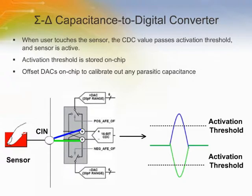The capacitance-to-digital converter on the AD7147 has a sigma-delta architecture with 16-bit resolution. There are 13 possible inputs to the CDC, which are connected to the input of the converter through a switch matrix. Each capacitance input can be connected to the positive input or to the negative input of the converter. Connecting to the converter's positive input results in an increase in CDC value when the user touches the sensor, while connecting to the negative input results in a decrease.